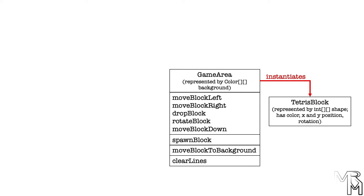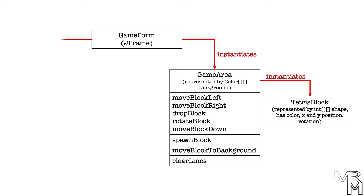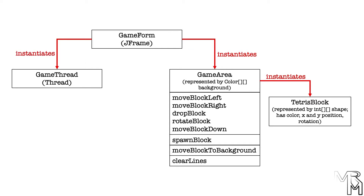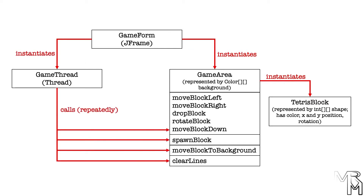Each Tetris block object has a shape represented by an array of integer arrays, color, position, and rotation. In addition to this, we have a GameForm class that extends JFrame and serves as the main form of our game. The GameForm class is responsible for instantiating the GameArea class and the GameThread class. The GameThread class, in turn, is responsible for repeatedly calling some methods of the GameArea class. The GameForm class also calls some methods of the GameArea class, but unlike the GameThread class, it doesn't do that at regular time intervals, but on key press — in other words, it's responsible for taking user input. This diagram illustrates the main functionality of the program.